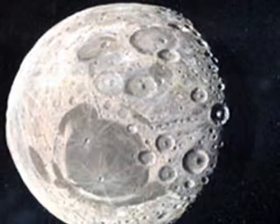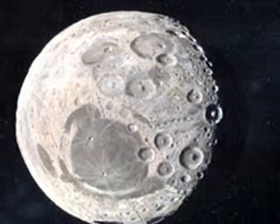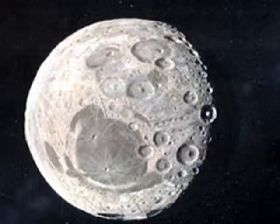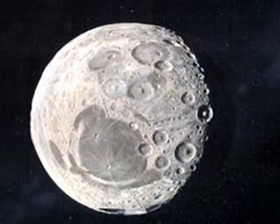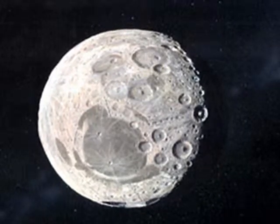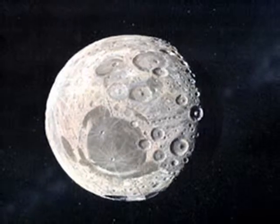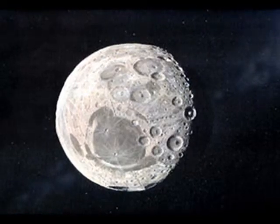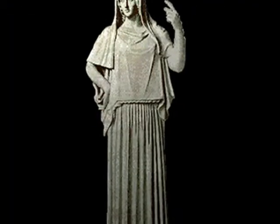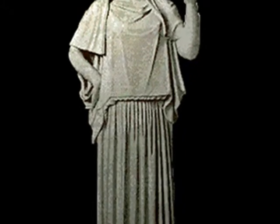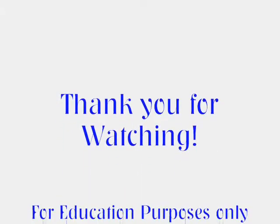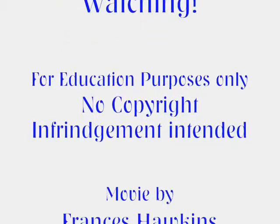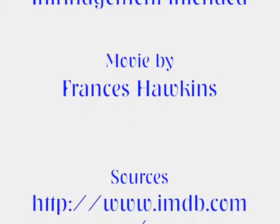The brightest asteroid is Vesta, and it is the second most massive object in the asteroid belt, with a mean diameter of about 530 kilometers and an estimated mass of 9% of the mass of the entire asteroid belt. It was discovered by German astronomer Heinrich Wilhelm Olbers on March 29, 1807, and named after the Roman virgin goddess of home and hearth.